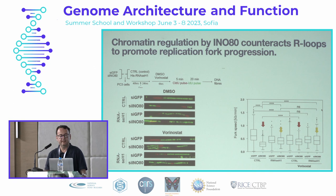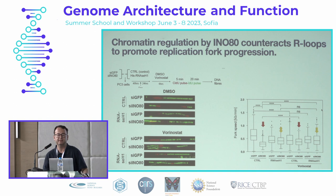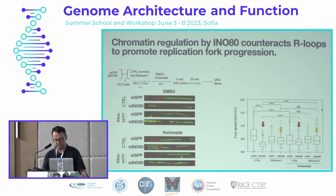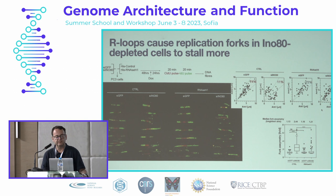Next we treated INO80-deficient cells with the HDAC inhibitor vorinostat, and we observed that it also rescued the replication defect. However, when combined with RNase H1 treatment, the effects did not add up, which suggests that chromatin regulation by INO80 counteracts R-loops to promote fork progression.